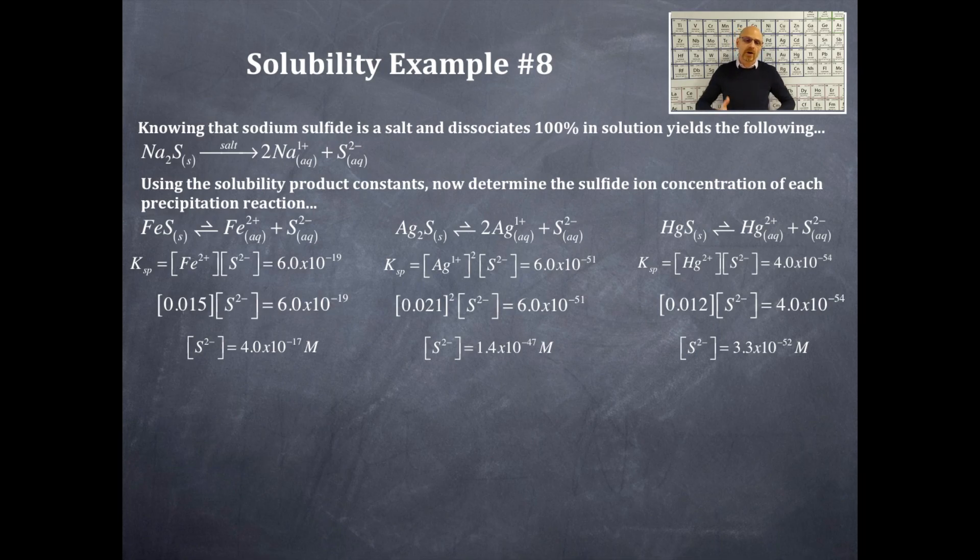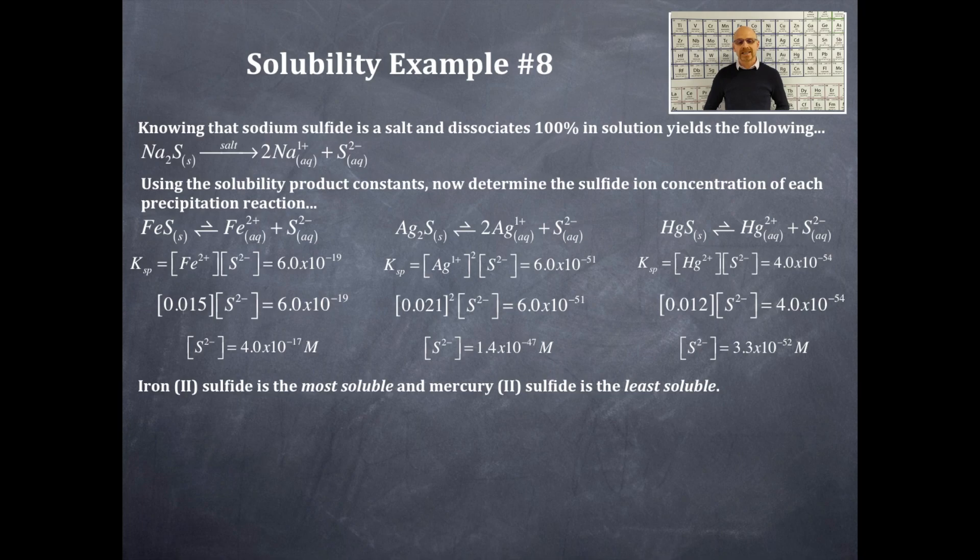Now, what we're going to do is we're going to look at all the sulfide ion concentrations that we have. Okay, so the iron 2 sulfide is the most soluble, that's why that value is the greatest value. Okay, and the mercury 2 sulfide is the least value, that's why it is the smallest value.